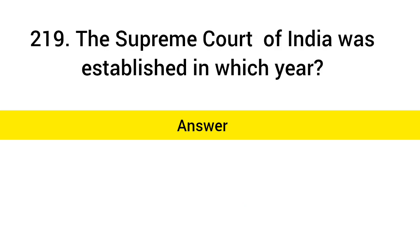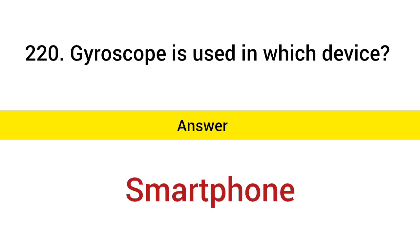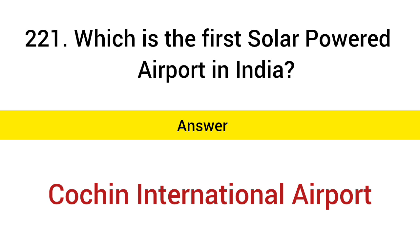The Supreme Court of India was established in which year? Gyroscope is used in which device? Answer: Smartphone. Which is the first solar-powered airport in India? Answer: Cochin International Airport.